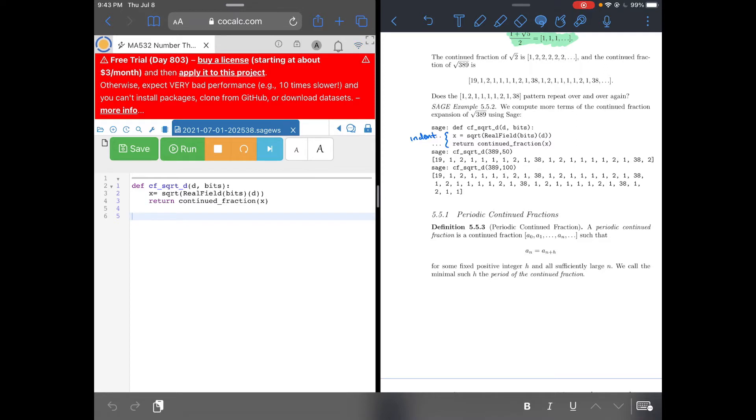SAGE will take that, save it as x, and compute real field bits of d. How precise do you want to approximate square root of 2 if d is 2? Then it'll spit out the continued fraction representation. Continued fractions is already a built-in function.